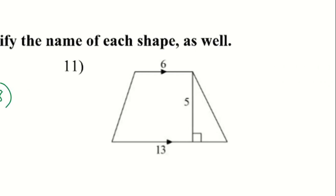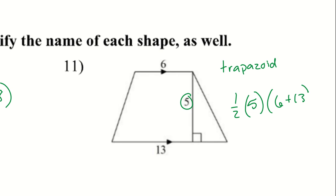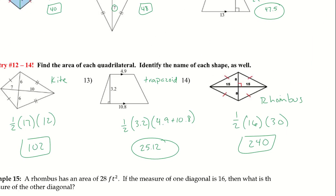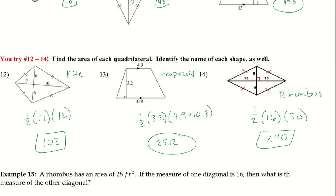Number 11 is a trapezoid, which uses a slightly different formula. Area = ½ × h × (b₁ + b₂). The height is 5, and the two bases are added together — 6 + 13, not multiplied. Plugging in gives an area of 47.5. Then try problems 12, 13, and 14 — a kite, a trapezoid, and a rhombus. For kites and rhombuses, use the diagonals; for a trapezoid, add the bases and multiply by the height.